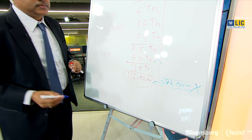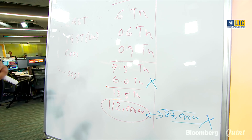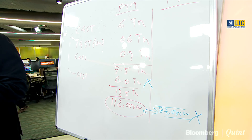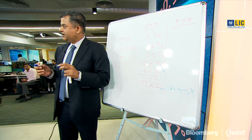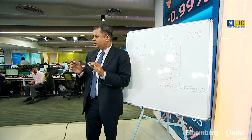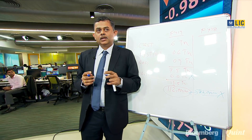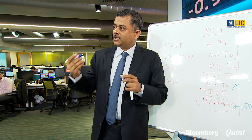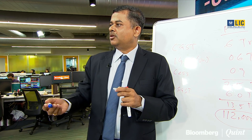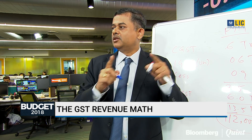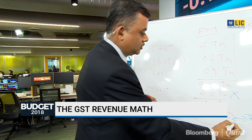Secondly, the 87,000 crore disclosed figure is wrong. What the government disclosed for July is like 92,000 crores, but after that many people paid GST for July in August — and that number is not being updated in the disclosed figure. If you add up the cash actually collected, as recorded in the CGA accounts, the five-month average is actually 96,000 crores.